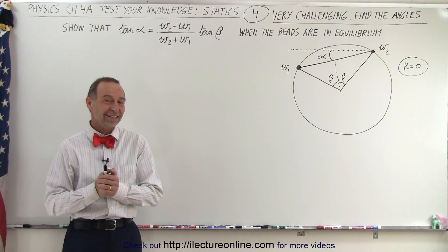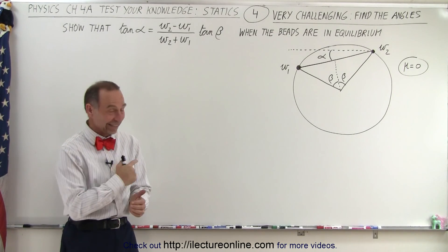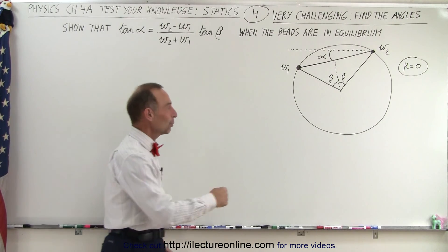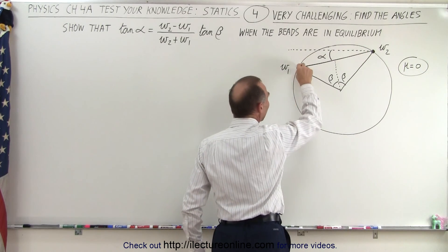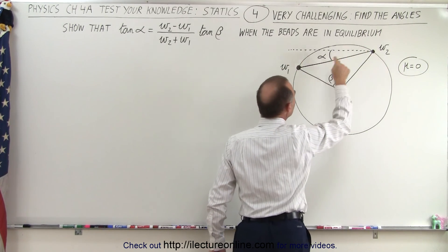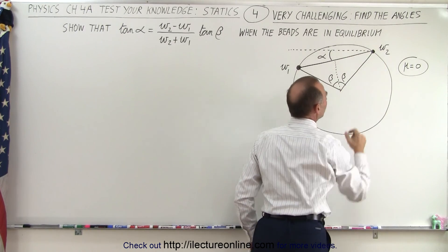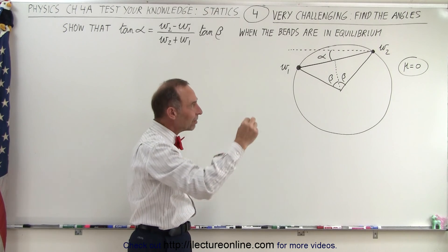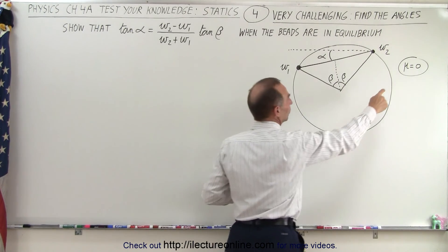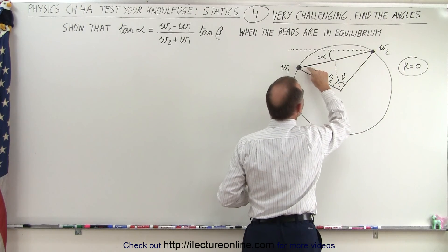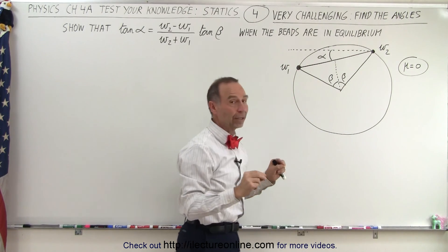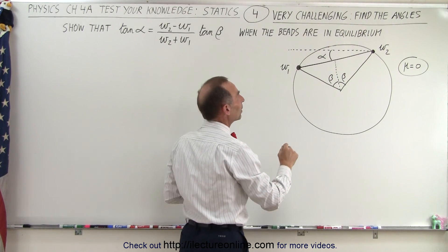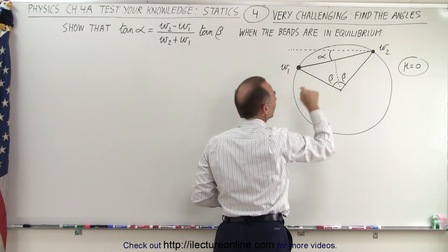Welcome to our lecture online. If you want something challenging, here it is. This is a challenging problem. So let me explain what we have. We have a metal ring. Attached to the metal ring are two beads that have weight W1 and W2 — that's mass times acceleration due to gravity. They can slide on the ring frictionlessly; there's no friction. The two beads are connected to each other with a string. Now the question is, when they reach equilibrium, can you find a relationship between the angle alpha and the angle beta?